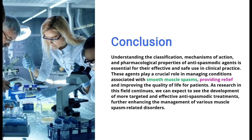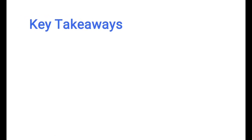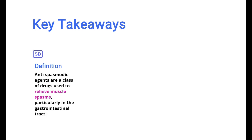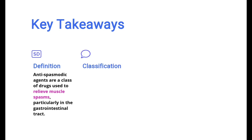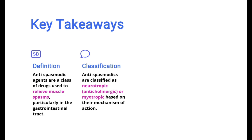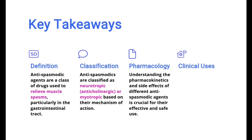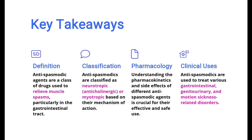In conclusion, antispasmodic drugs are vital tools in managing a variety of medical conditions involving muscle spasms and cramps. By understanding their classifications, mechanisms, uses, and potential side effects, we can better appreciate their role in clinical practice. Key takeaways: antispasmodic agents are drugs that provide relief from muscle spasms, particularly in the gastrointestinal tract. They are classified into neurotropic or anticholinergic, and myotropic types based on their mechanism of action. Understanding their pharmacology and side effects is crucial for effective and safe use. Clinically, antispasmodics are used to treat various gastrointestinal, genitourinary, and motion sickness-related disorders.